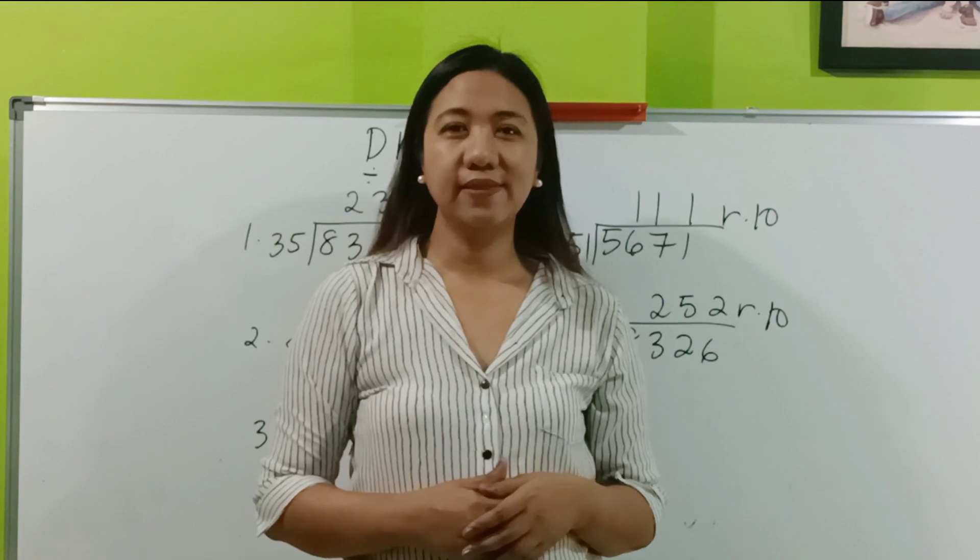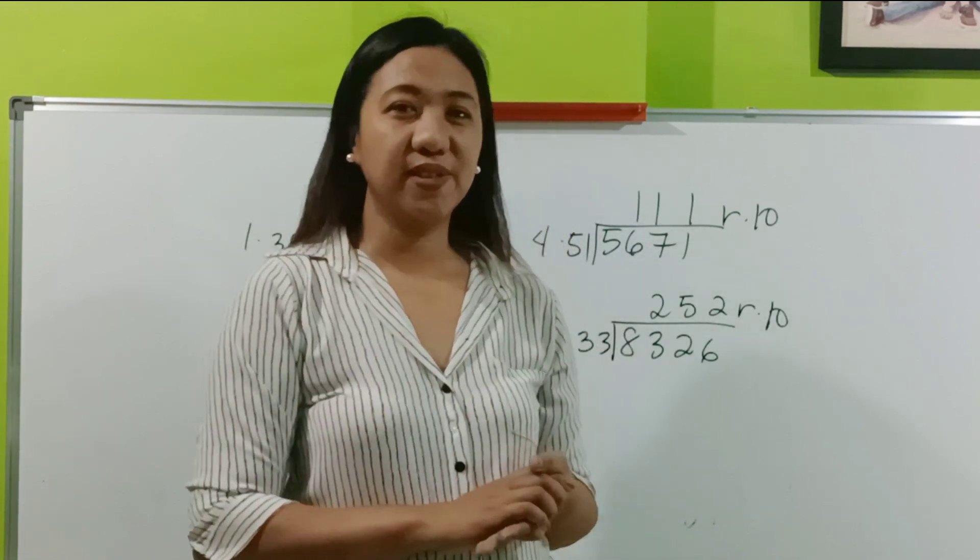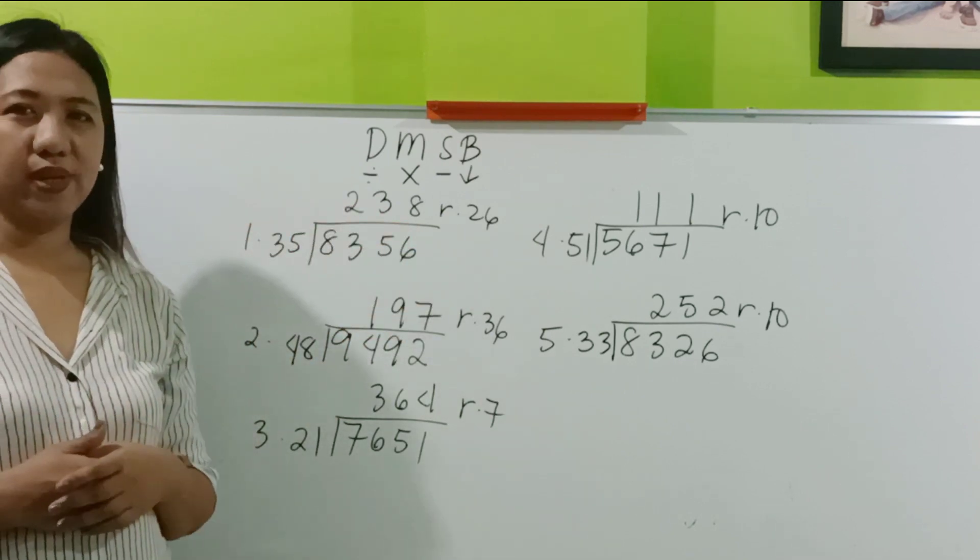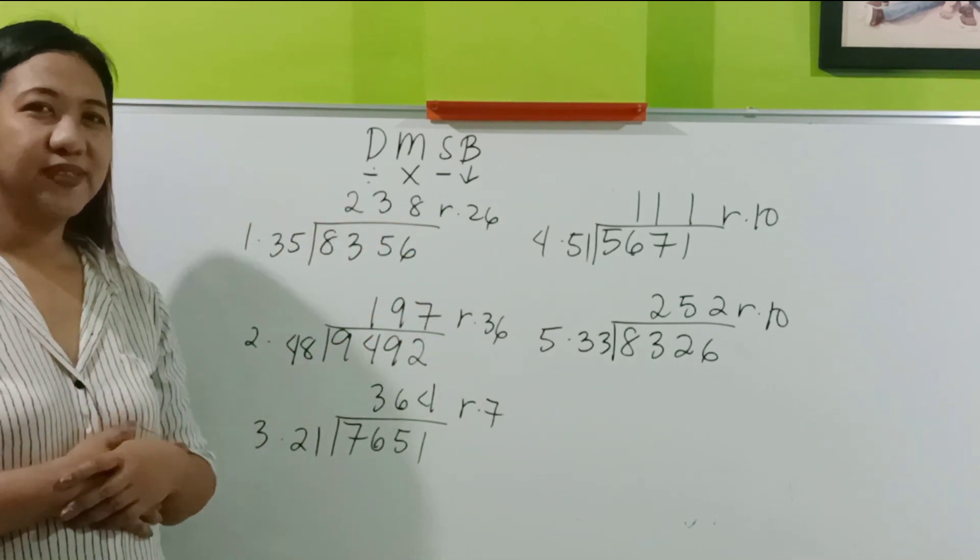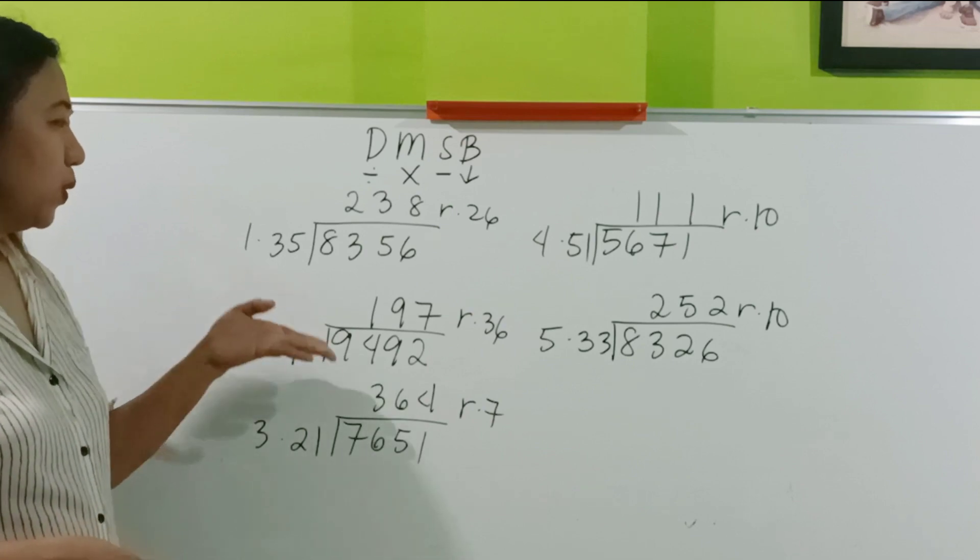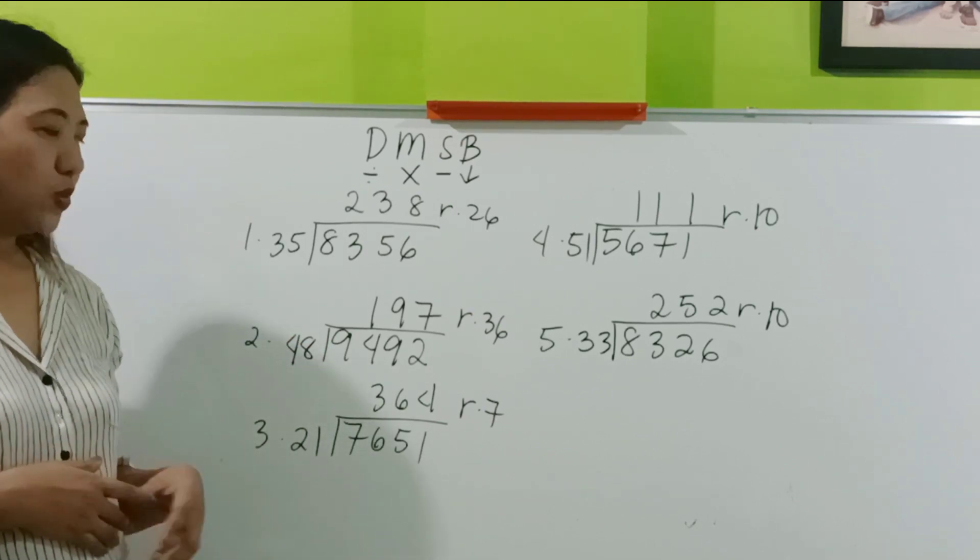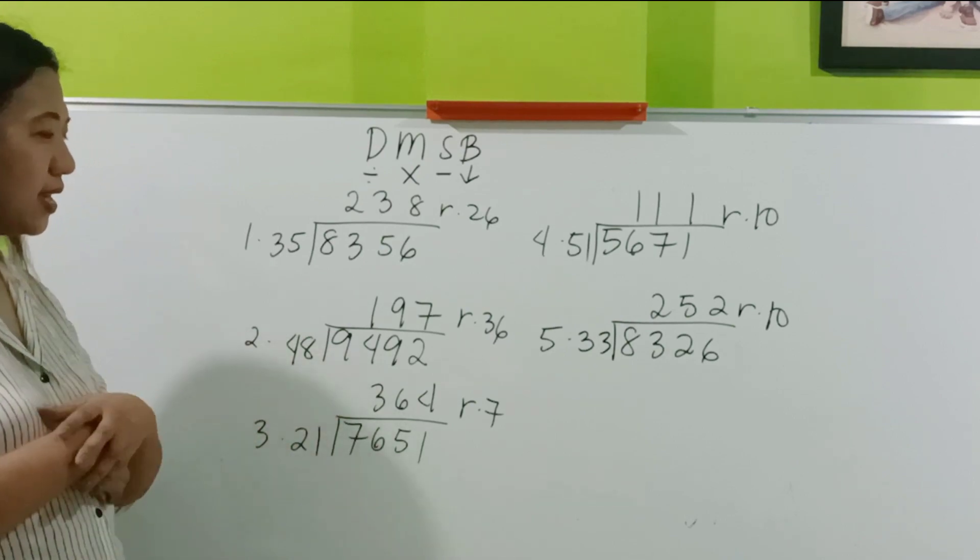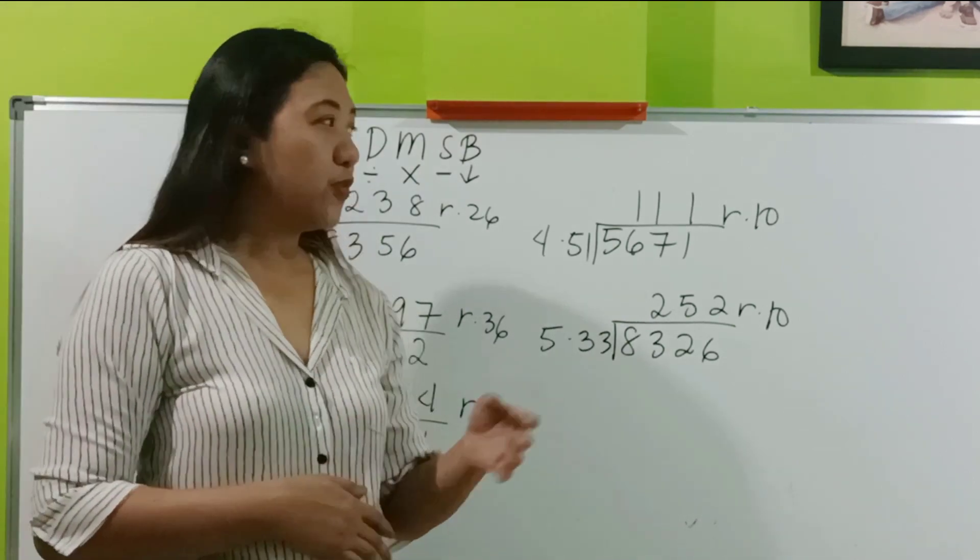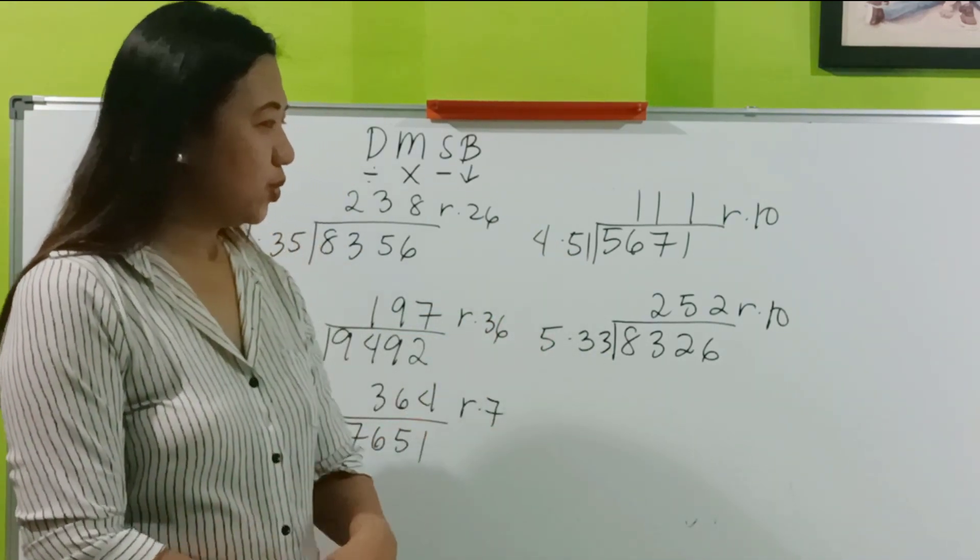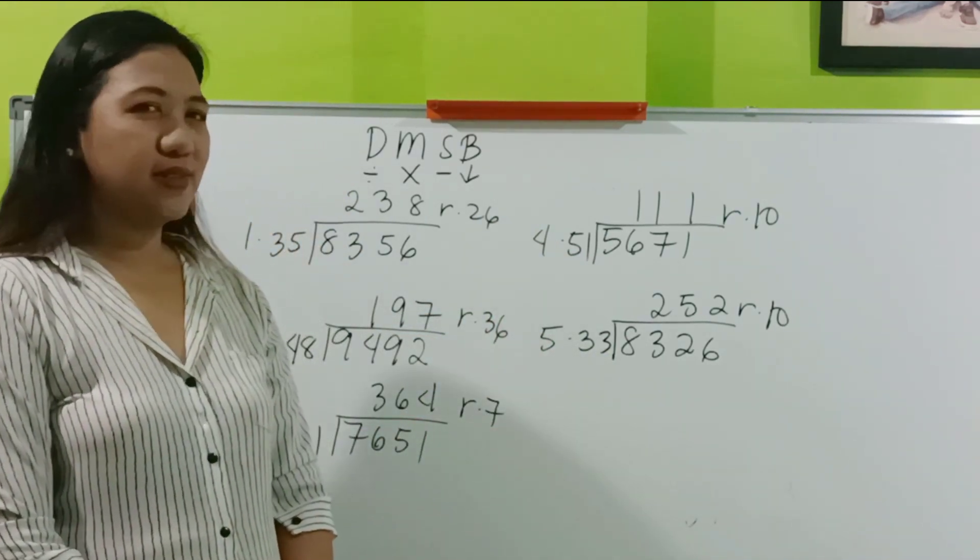Are you done? So, let's have the answers. Number 1, 238 remainder 26. Did you get it? I hope so. Number 2, 197 remainder 36. We go to number 3, 364 remainder 7. Number 4, 111 remainder 10. And number 5, 252 remainder 10.